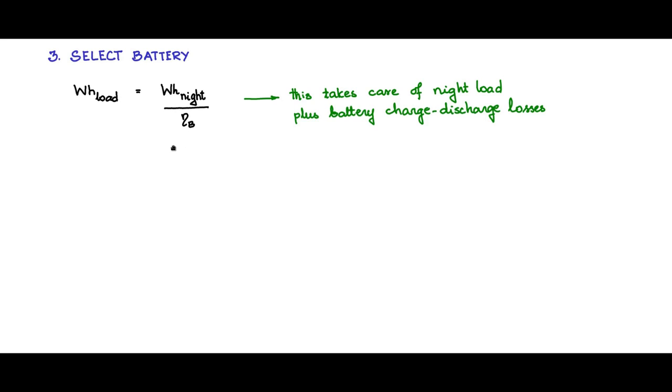Now, this is if the PV panel participates in supplying to the load every day. However, we just discussed number of days of autonomy. There can be cloudy days, contiguous days without significant amount of sun power. Let us say that NA, number of days of autonomous operation, is not zero, which means you could have one day without the PV panels participating or two days without the PV panels participating.